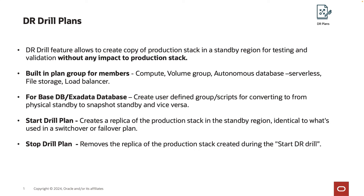In a DR production group, we support various member types which can be added depending on your topology. So if you add a compute, volume group, autonomous database, serverless, file storage, and load balancer in both primary and DR protection group according to a DR topology, and then if you create a DR drill plan type, you'll be able to see built-in plan groups and steps automatically created.